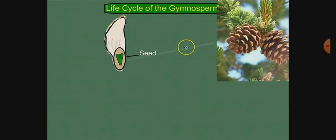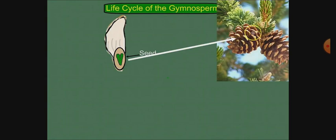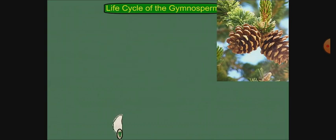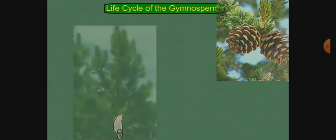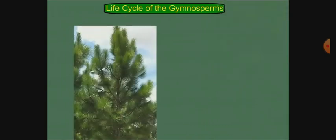The seed is placed on the scaly leaves of the female cone. The seed develops within the cone, and the endosperm provides nutrition inside the seed. This concludes the life cycle of gymnosperms.